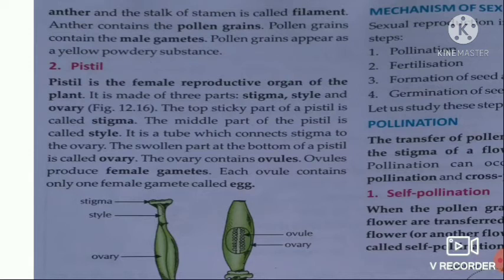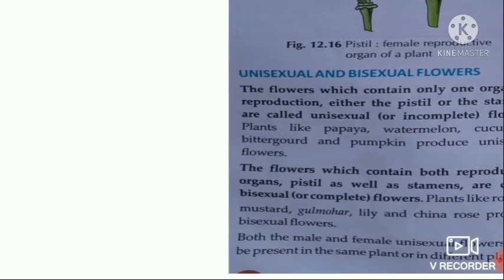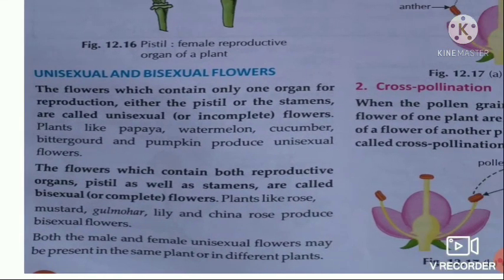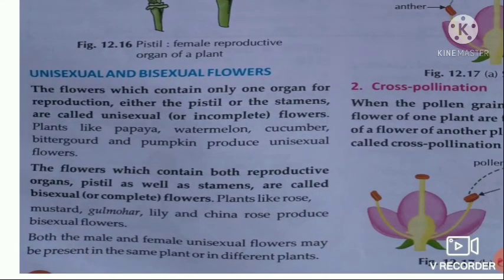The style is the tube-like middle part. The ovary is the swollen bottom part of the pistil. The ovary and ovules produce female gametes. Each ovule contains only one female gamete, which we call the egg.